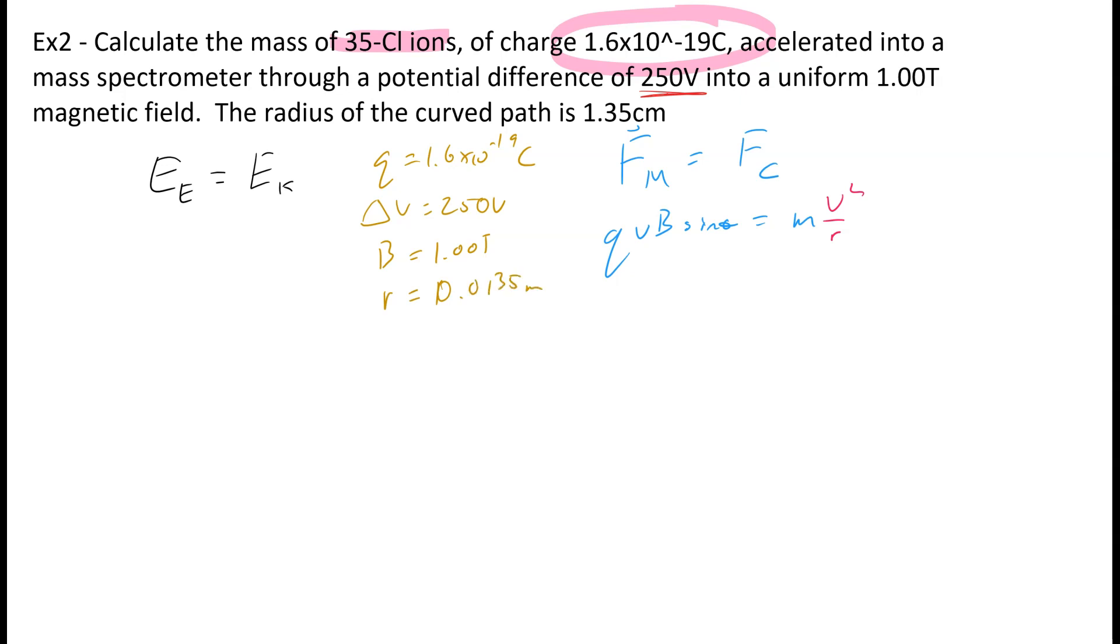So we have listed out information, so we can list our equation right here, which is Q delta V is equal to 1.5 mv squared. Now what you're going to notice if we look at this equation in the black ink is we want to find mass. That's the point of all this.